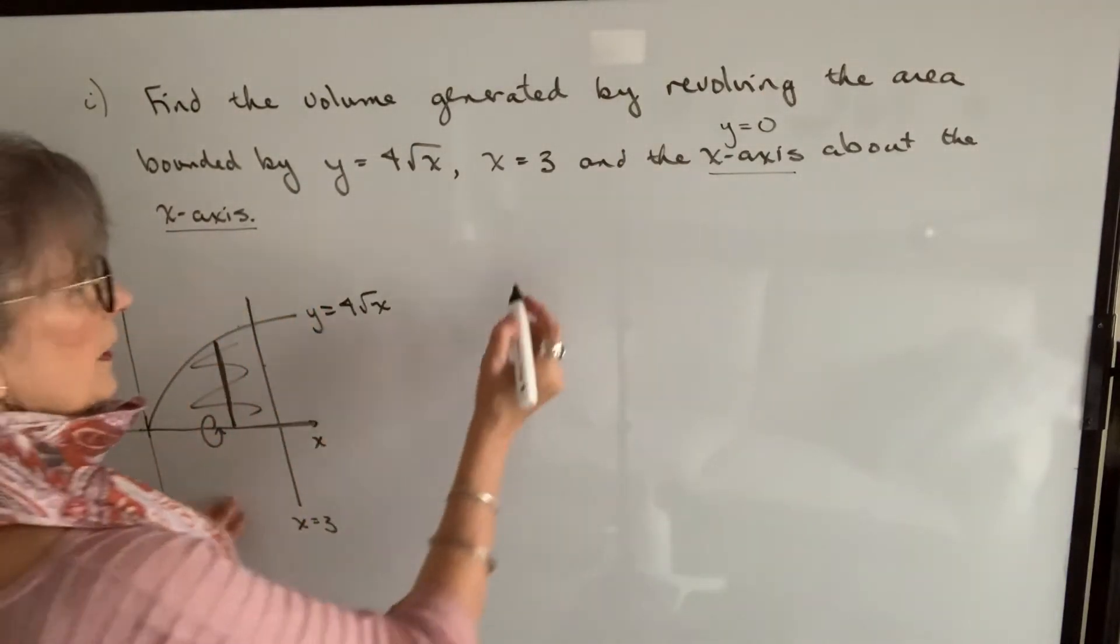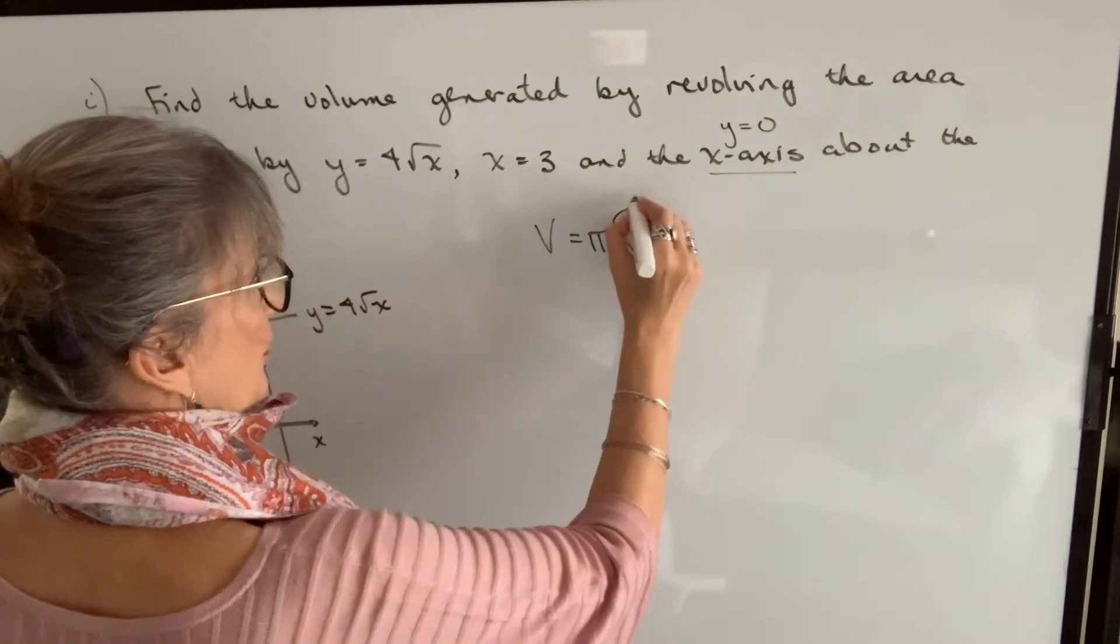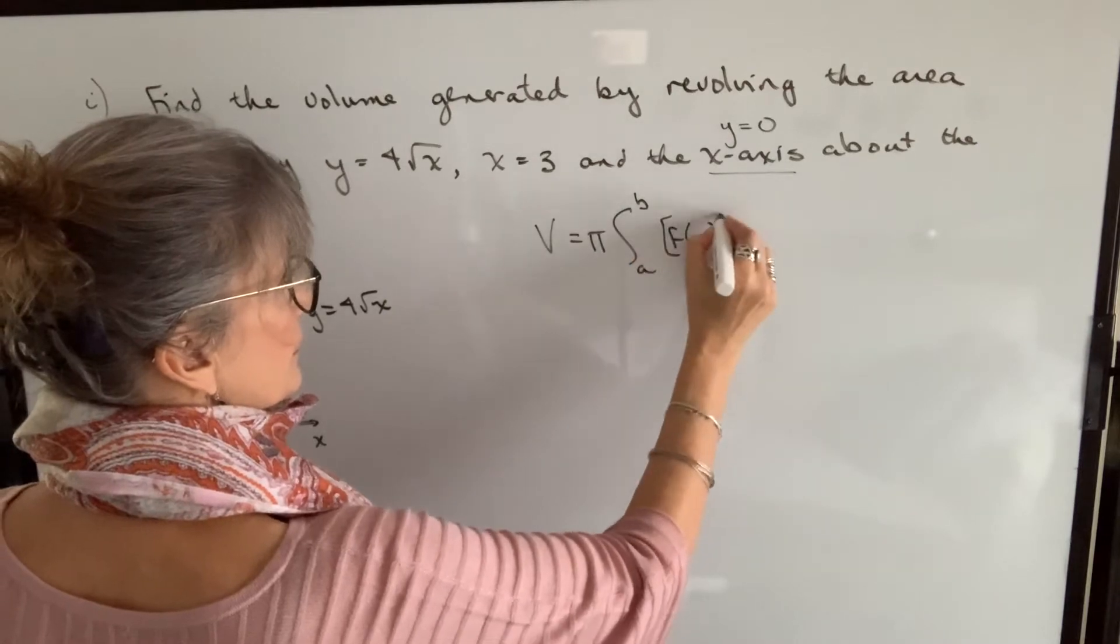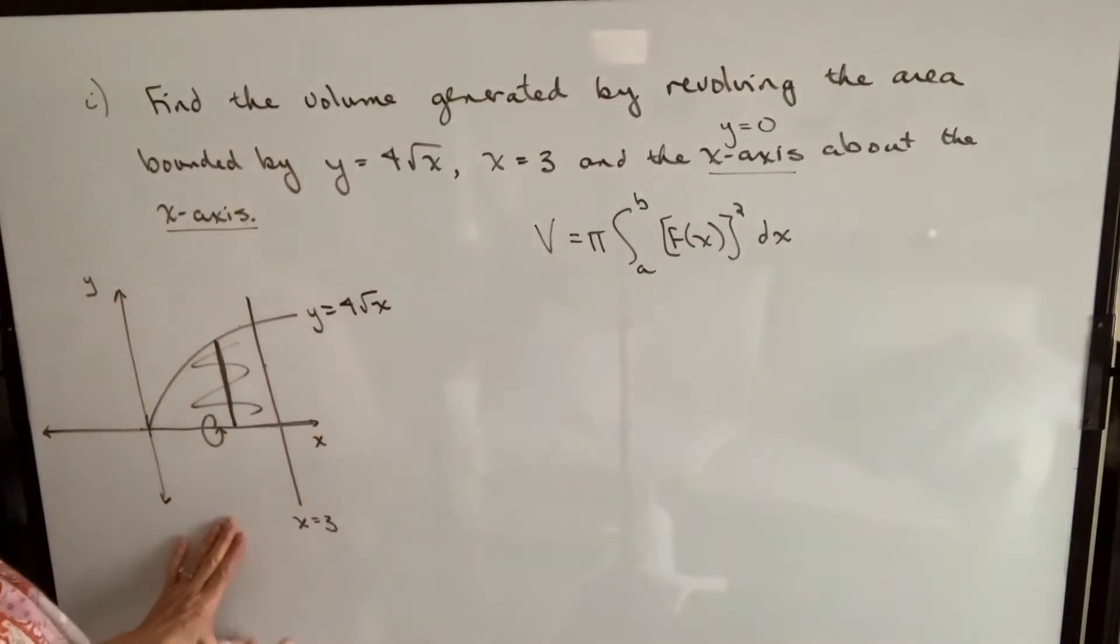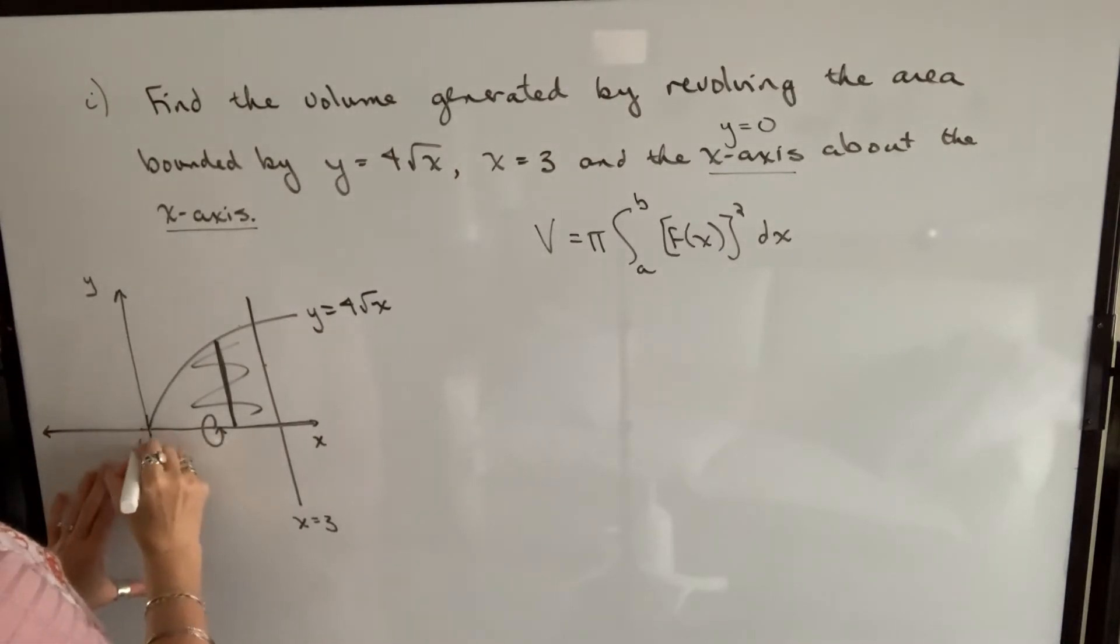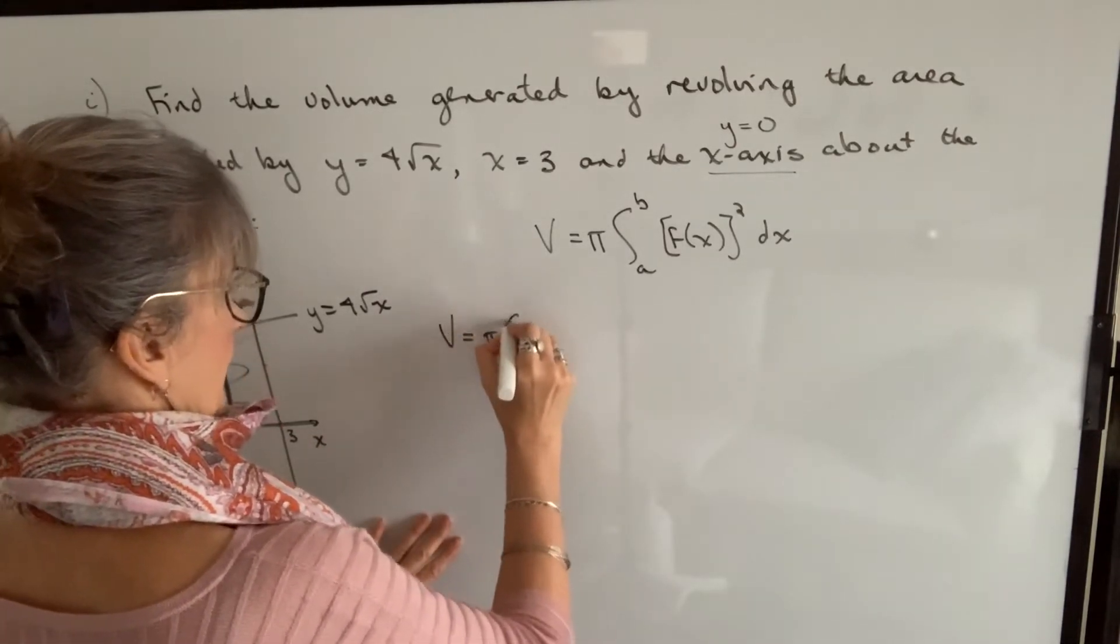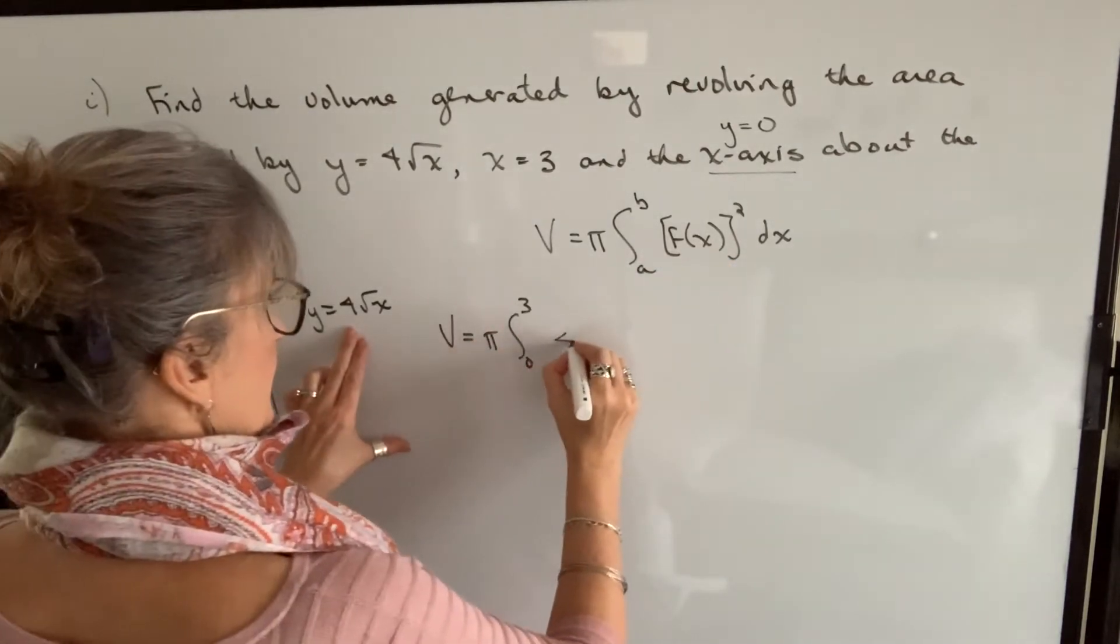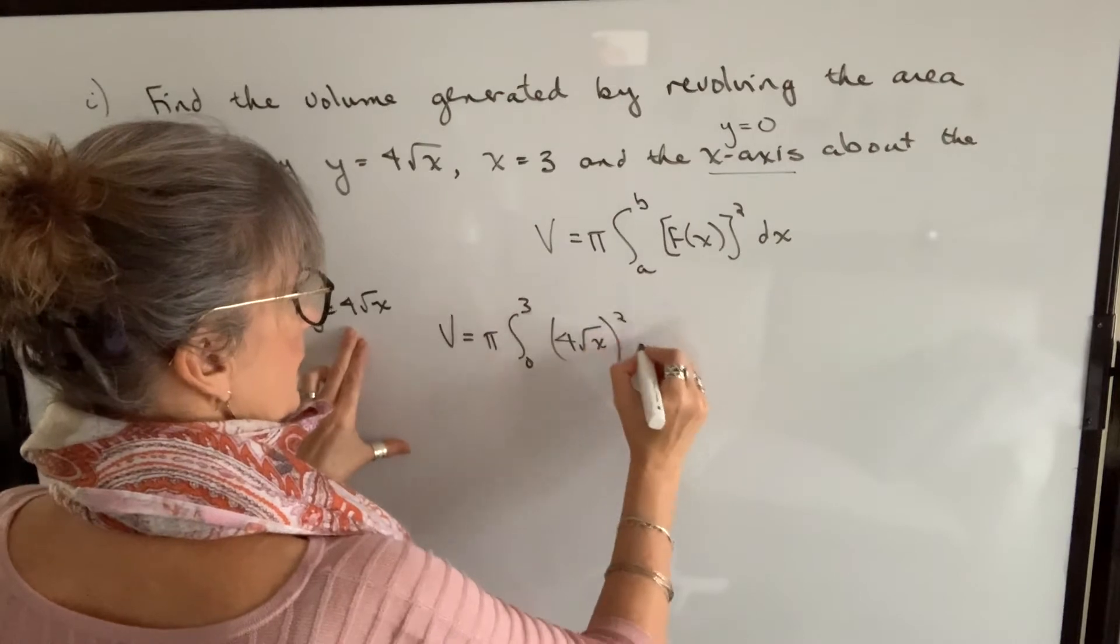So we know that volume is pi times the integral from a to b of our function squared dx. So we just have to determine what all those values are. We know our a in this case will be 0 and b will be 3. Our function is 4 times root x. And that function gets squared dx.